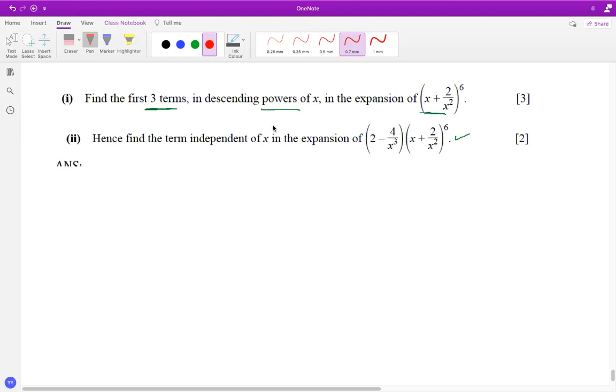When we talk about descending power, it generally starts with the highest power of x, like x to the power 6, then x to the power 5, and so on. Ascending power starts with a constant term, then x squared, then x cubed. When the question mentions descending, students often think they have to start from backwards, but actually just do it normally and write down the first few terms.